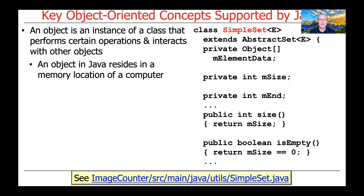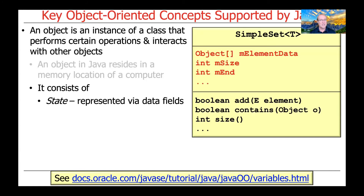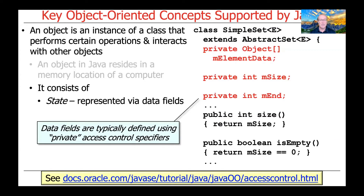SimpleSet is a class — a generic class, which means it can be parameterized by the elements that are part of the set. It consists of several parts. It consists of a specific state, which is represented via data fields, things like mElementData, mSize, mEnd, and so on, as you see in this simple UML structure diagram. Data fields are typically specified using the private access control specifier keyword in Java, meaning that they can't be accessed directly by clients of SimpleSet.